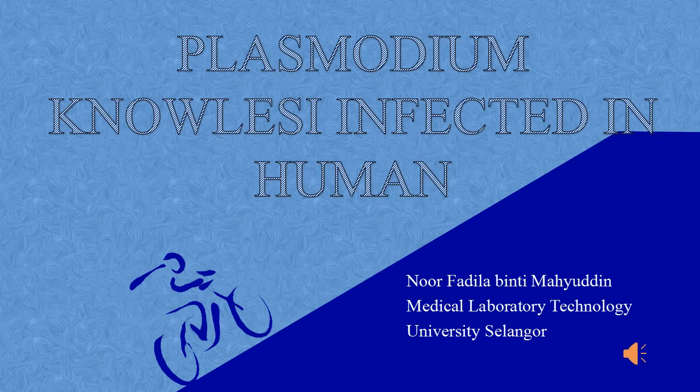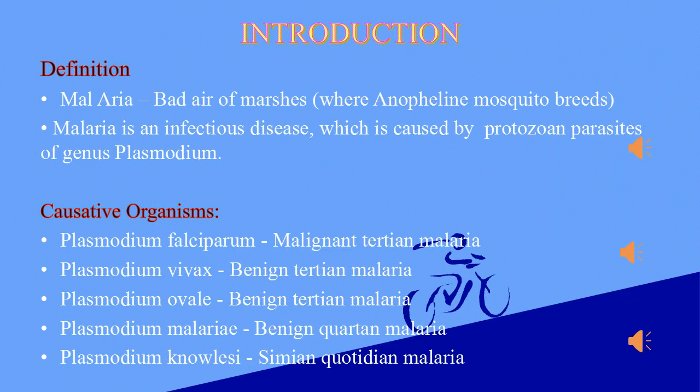Hi everyone, today I'm presenting about Plasmodium knowlesi. Malaria is bad air of marshes, where anopheline mosquitoes breed. Malaria is an infectious disease which is caused by protozoan parasites of genus Plasmodium.